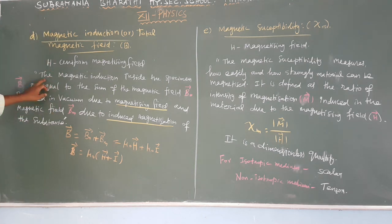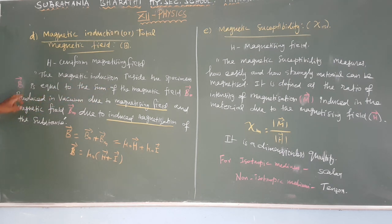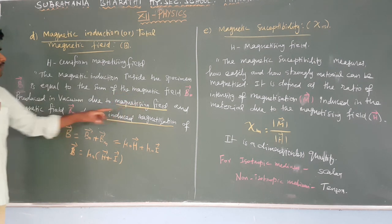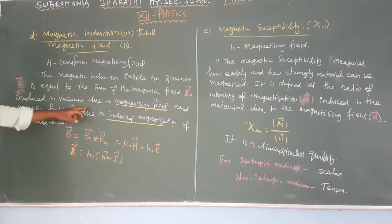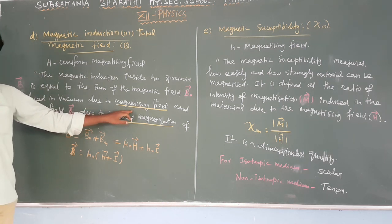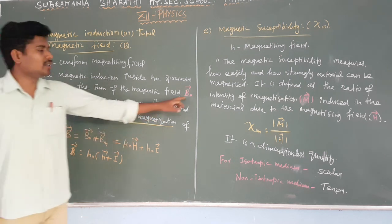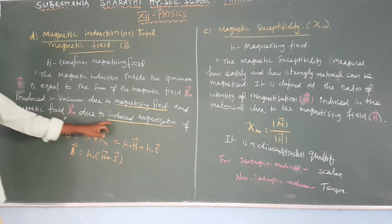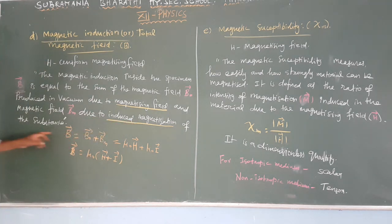The magnetic induction inside the specimen, B, is defined as the sum of the magnetic field B0 produced in vacuum due to the magnetizing field, and the magnetic field BM due to the induced magnetization of the substance.